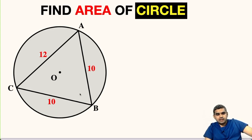AB and BC are equal in length, that is 10 units, while AC is 12 units. In short, this triangle ABC is an isosceles triangle because side AB is equal to BC. Now we have to find the area of this circle.